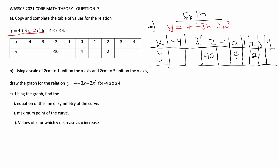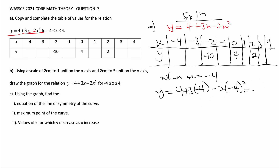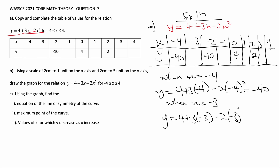This is part a — copy and complete the table of values. When x equals minus 4, y equals 4 plus 3(minus 4) minus 2(minus 4) squared, which gives minus 40. When x equals minus 3, y equals 4 plus 3(minus 3) minus 2(minus 3) squared, which gives minus 23. For the remaining x values, we get minus 1, 5, minus 5, and minus 16.